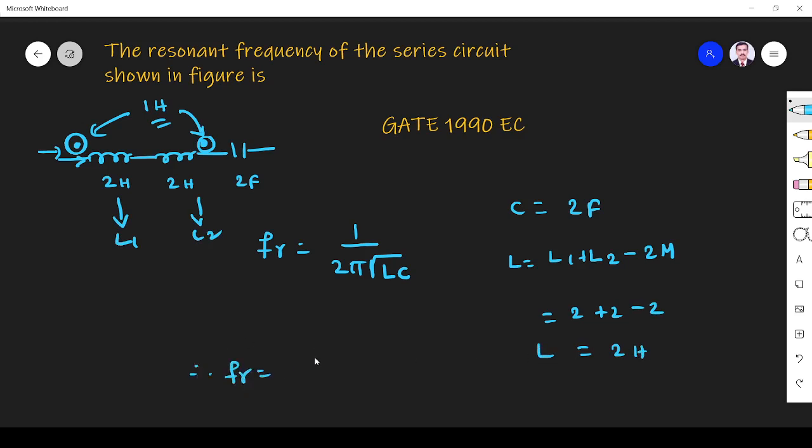Therefore fr equals 1 by 2π√(2 into 2). So 1 by 4π, that is the answer. So it is 1 by 4π. Thank you.